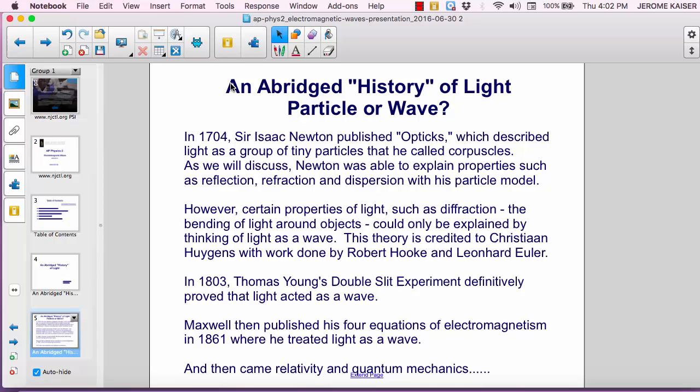However, certain properties of light such as diffraction, the bending of light around objects, could only be explained by thinking of light as a wave. This theory is credited to Christian Huygens with work done by Robert Hooke and Leonard Euler.